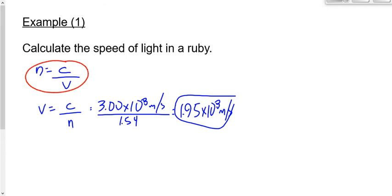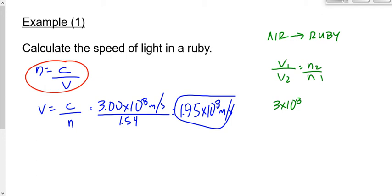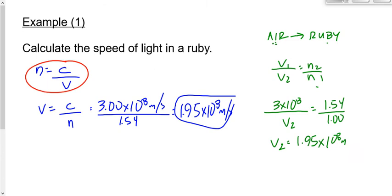The downside of that approach is that N = C/V doesn't appear on your data sheet. The other way is to use two parts of Snell's Law: V1/V2 = N2/N1. Assuming we're going from air to ruby, V1 is 3 times 10 to the 8, V2 is what we're looking for, N2 (ruby) is 1.54, and N1 (air) is 1.00. Rearranging and solving gives the same answer: 1.95 times 10 to the 8 meters per second.